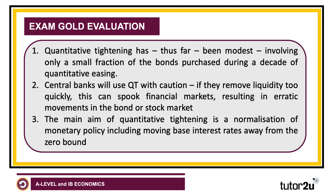The main aim of quantitative tightening is just to tighten the belt and normalise monetary policy. We've had a decade or more of ultra-low interest rates and aggressive expansion of central bank balance sheets. So quantitative tightening is, in theory, an attempt to normalise where we are — reduce the scale of bonds held by central banks, and move base interest rates away from the zero bound. We'll see what happens to quantitative tightening in 2023 and 2024.